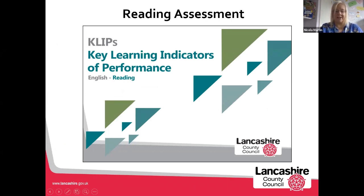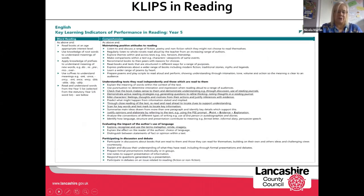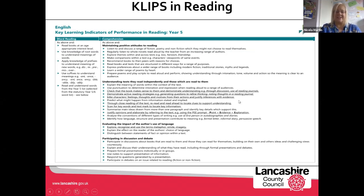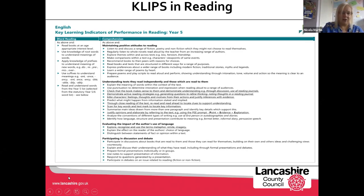This brings us to reading assessment. We've got another document that supports this from Year One to Year Six — and the same for writing and maths — commonly known as CLIPPT, the indicators of performance. The Key Learning Indicators of Performance are the same grids as the Key Learning grids, but this time have key skills identified: high value skills which are essential in that year group. These have been very carefully selected in terms of progression and expectation for moving to the next year group. We also looked carefully at the end of key stage assessments and teacher assessment frameworks so that these feed very specifically into those expectations at the end for the children.